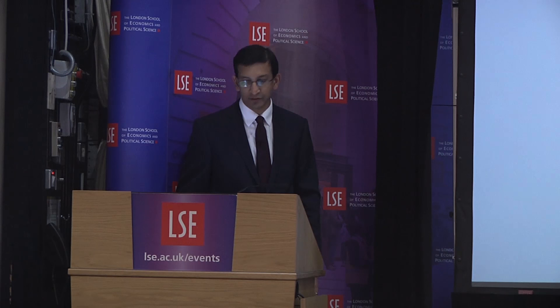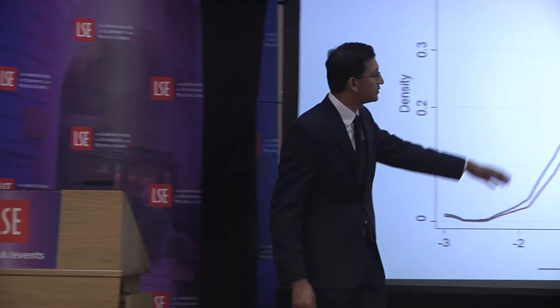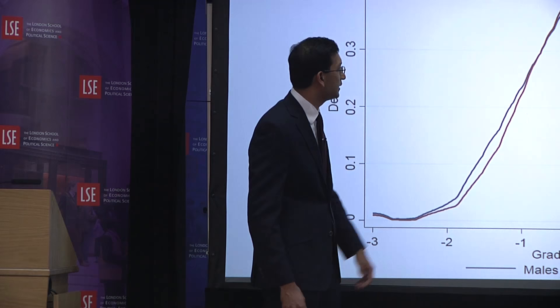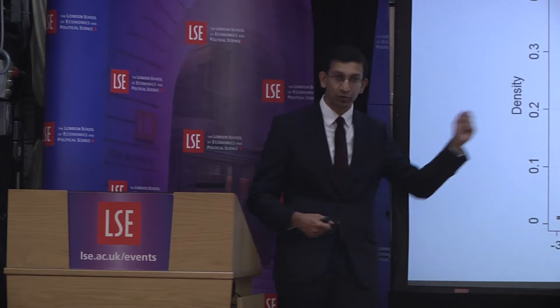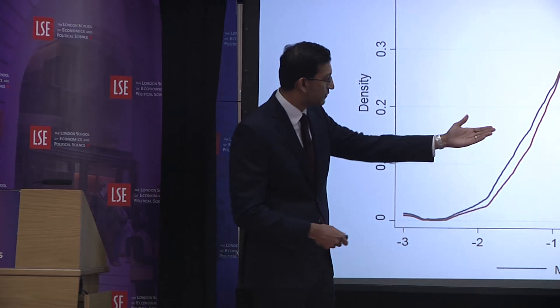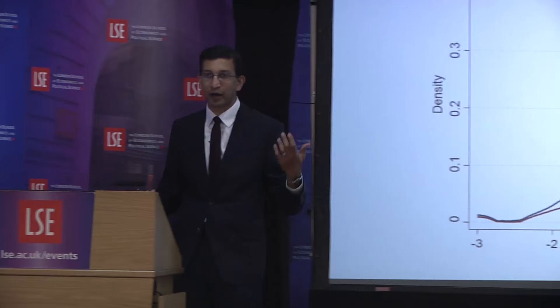To what extent might the gender gap be explained by differences in ability? Basically not at all. The distribution of test scores for boys and girls in third grade looks virtually identical. One hypothesis is that there's more variance in the distribution for boys, giving more boys in the upper tail, but there's minimal evidence of that. You explain less than 5% of the gender gap in innovation based on these measures of ability.